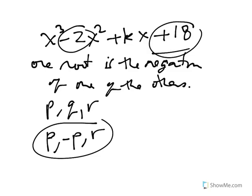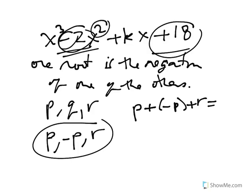The sum of the roots — p plus minus p plus r — is always the opposite of whatever the coefficient of the second biggest exponent is, so it's positive 2. And from this, we already know that one of the three roots is 2.